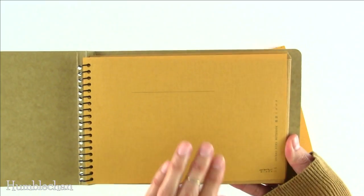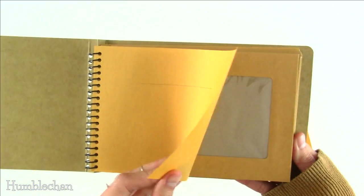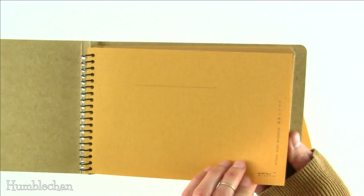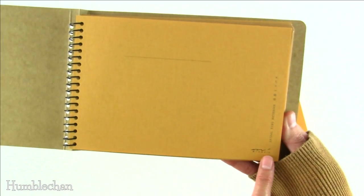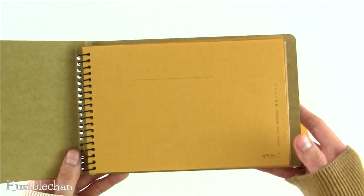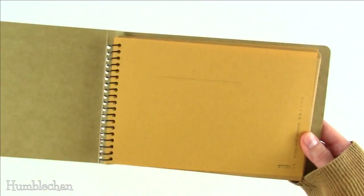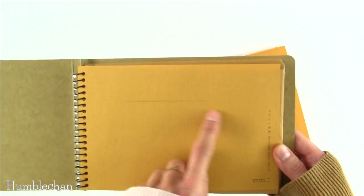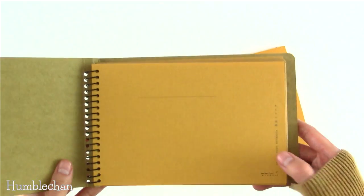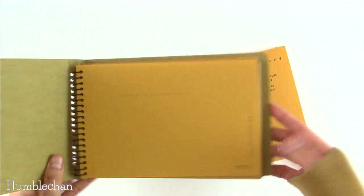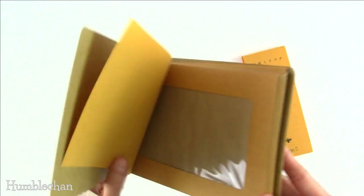The main difference that I saw was that the first page in the Midori version has this orangey paper, and it says Midori right there, and in the Traveler's Company branded version, the first page looks to be white or off-white with a rectangular box on the page. I prefer the Midori one. I just like this colored paper more.